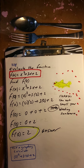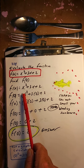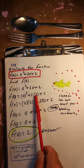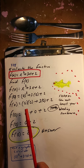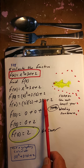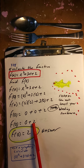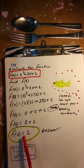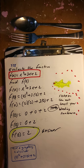Evaluate the function f of x equals x squared plus 3x plus 2 — a little bit harder, it's a quadratic. Find f of 0: put a 0 in for every x. 0 squared is 0 times 0 which is 0, 3 times 0 is 0, plus 2. So 0 plus 0 plus 2 is 2. So f of 0 is 2.